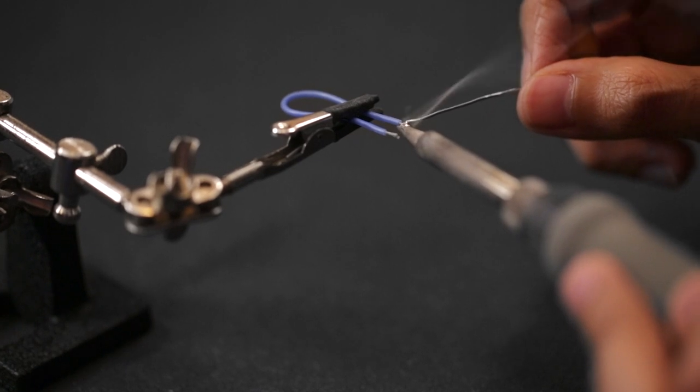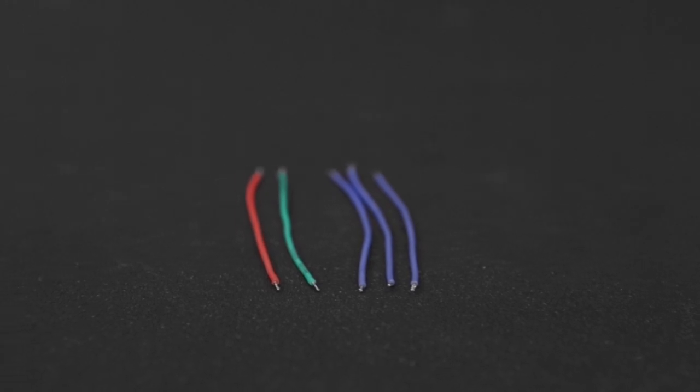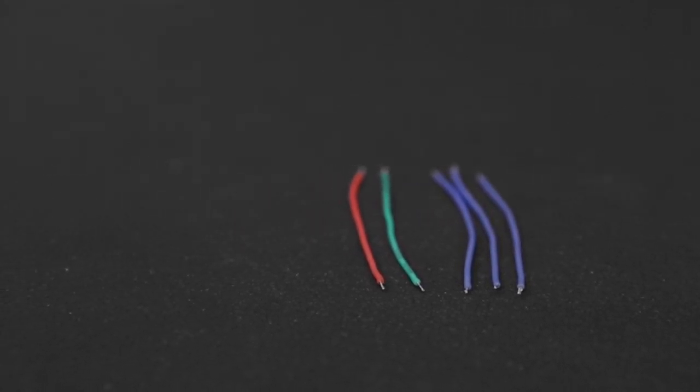Tin the wires by heating them up using the tip of the soldering iron. This prevents the stranded wires from fraying and makes connections easier. We only need 5 wires for this project and they don't need to be different colors, but it does help keep track of connections.